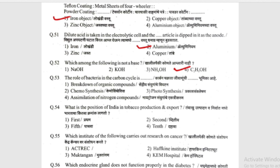The role of bacteria in the carbon cycle is what? (Carbon chakra, jivanu nchi timba timba bhoomika ai.) Options: breakdown of organic compounds (sendriya sanyuganchya vighatan), chemosynthesis, photosynthesis, or breakdown of nitrogen compounds. The answer is breakdown of organic compounds.